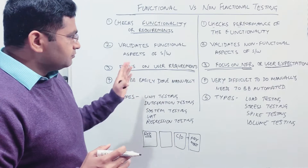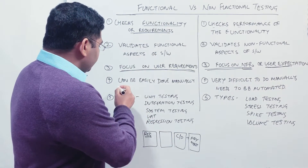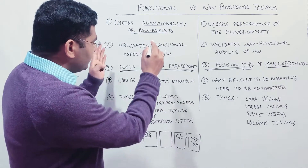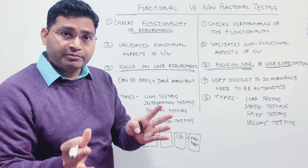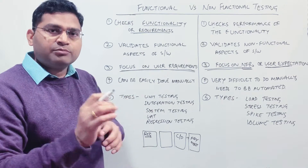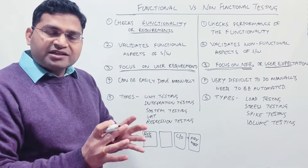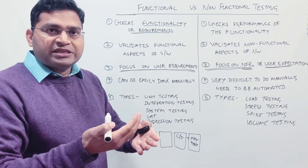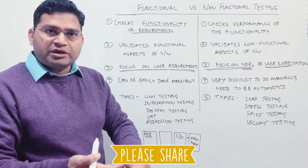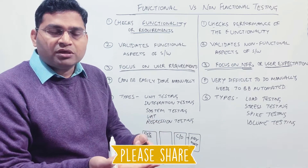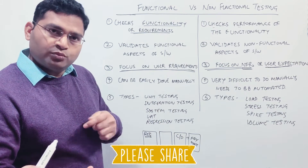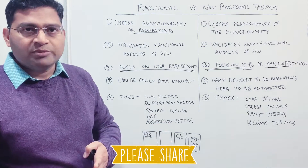Point four: functional testing can be done very easily manually. You can launch the e-commerce website, click the register button, provide the details — all of that is easily done in any browser, or by installing and launching an Android or iOS app manually. You can also automate it easily.